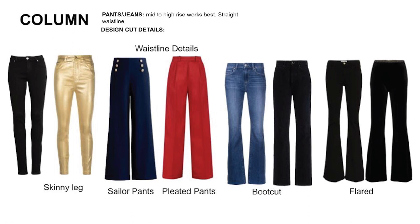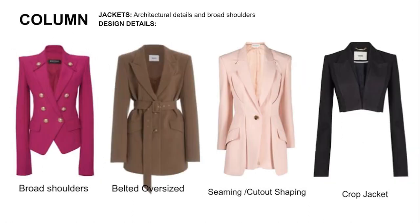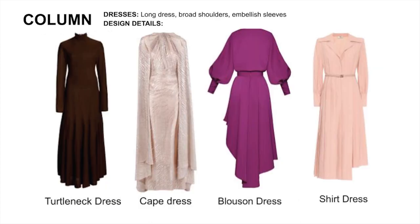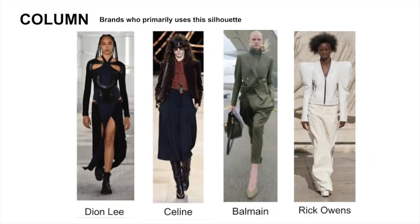Show off those long legs. For jackets, build up those slender shoulders and play up the lean lines with structural details. For coats, lean into the long, linear shape by going full length. For dresses, go knee to floor length with a closed neckline and structured sleeves.